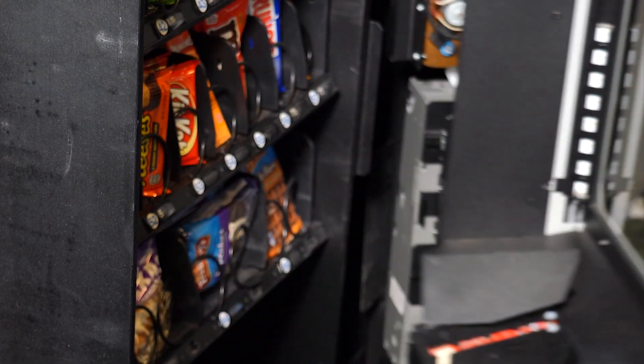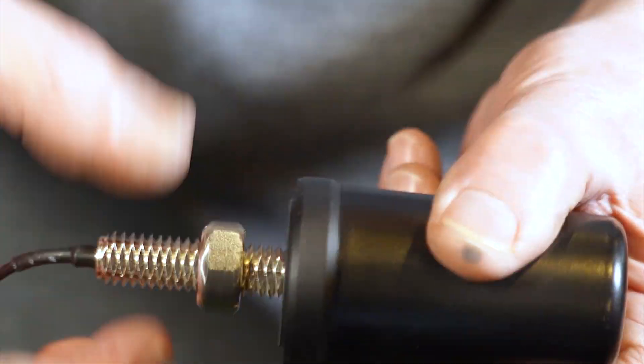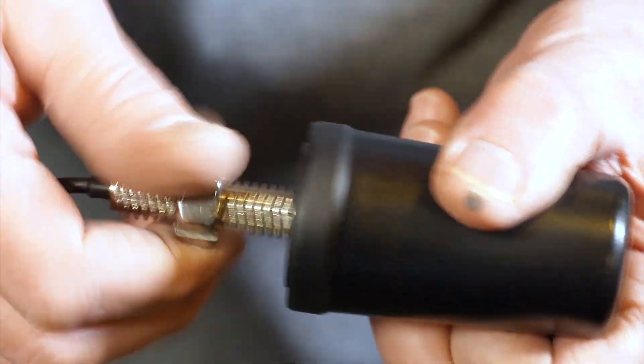Now we will attach the cellular antenna to the top of the machine. Unscrew and remove the nut from the bottom of the antenna.